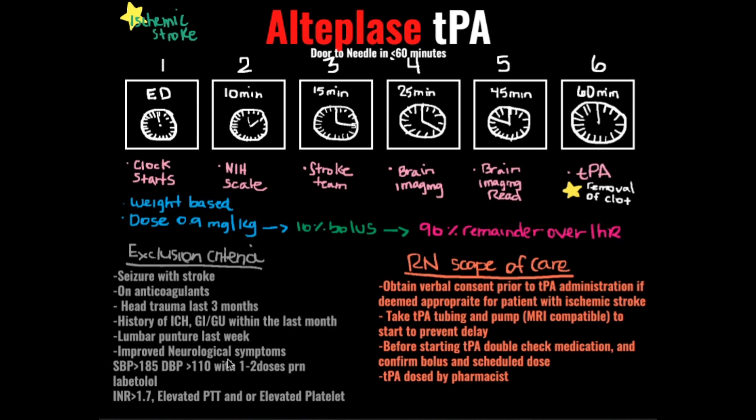Blood pressure parameters are also exclusion criteria: if systolic blood pressure is greater than 185 or diastolic is greater than 110, even with PRN antihypertensive medications such as labetalol to bring it down, and it is just not budging and the blood pressure is being sustained — you would exclude them. Additionally, if their INR is greater than 1.7, or they have an elevated PTT or elevated platelet level, they would be excluded.